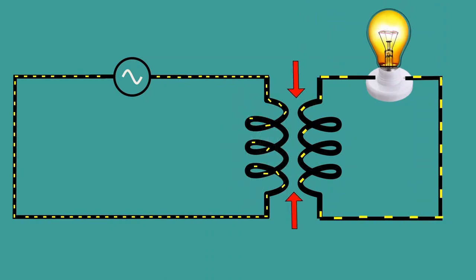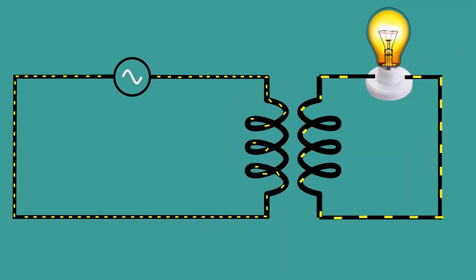Note that there is no contact between our first circuit and our second one. Then how does this bulb glow? The current flow in the second coil is due to the change in magnetic field in the first coil. This is called mutual induction.